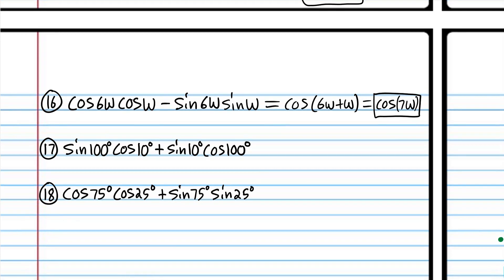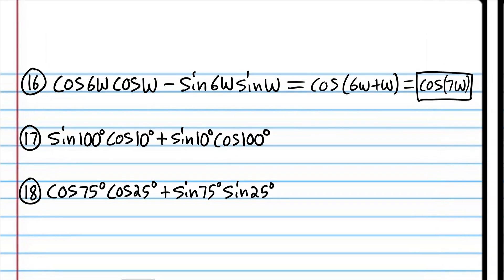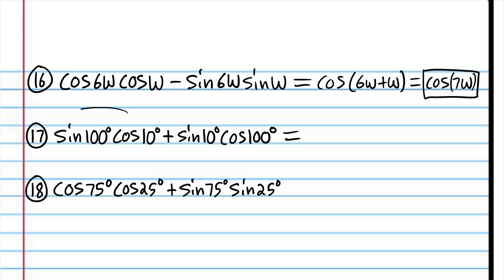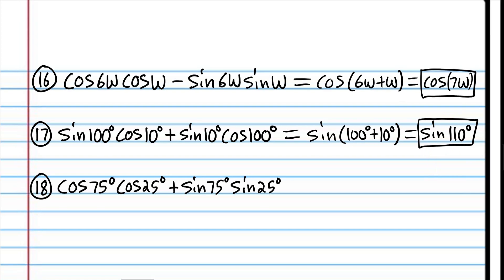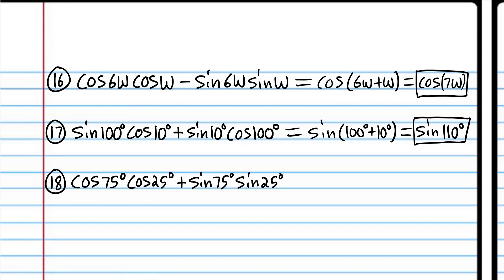Try number 17 and when you come back we'll do it together. We're back. We have a product of sine and cosine, so we're going to use the sine function, and we're going to add those angle measures to get sine(110°). Because there's no negative symbol or coefficient with a variable, we don't need parentheses.